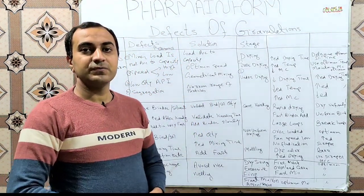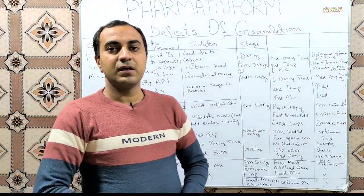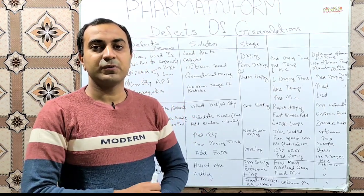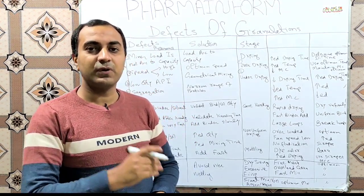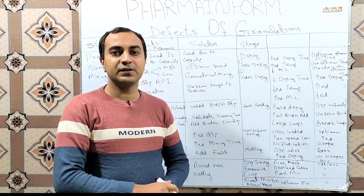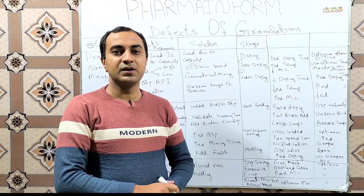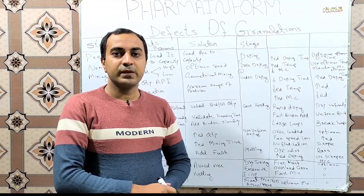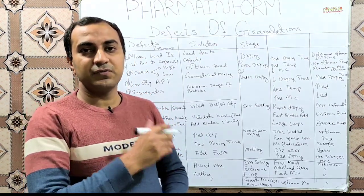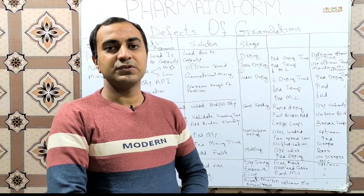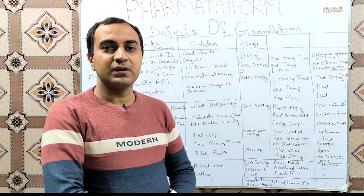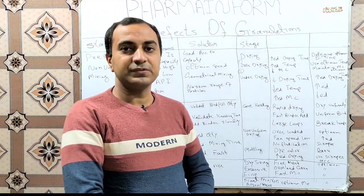Defects of granulation. As you know, granulation is the process in which we convert fine powders into large-size agglomerates to form granules. We will discuss the defects of granulation according to a page-wise discussion.